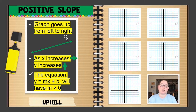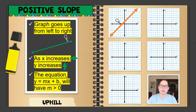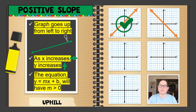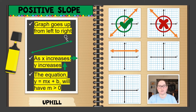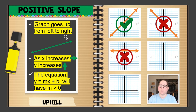Now we're going to look at five different graphs to determine which have a positive slope. On the first one, I draw my little guy on the left side and he's going up — positive slope. On the next one, he's going down to reach the right side, so that's not positive. On the third graph, he didn't go up or down, so that one is not positive either.